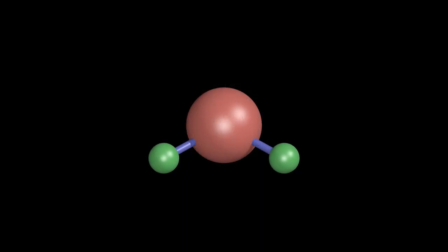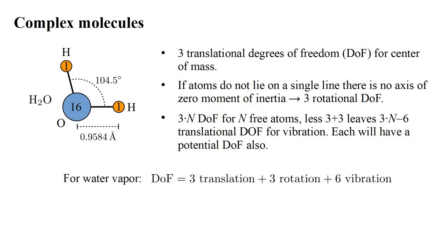Here is one vibrational mode, called the symmetric mode. Here is the asymmetric mode. And here is the bending mode. For water vapor, the quadratic degrees of freedom are three translation and three rotation of and about the center of mass, and six of vibration, for a total of twelve.